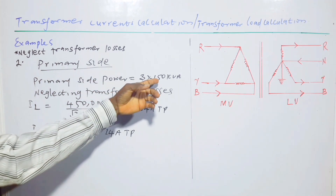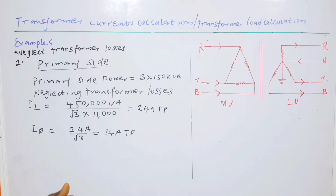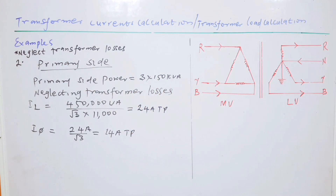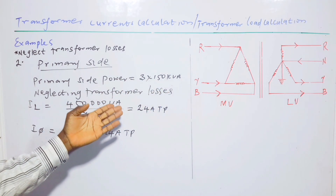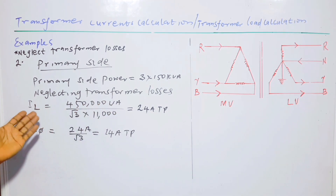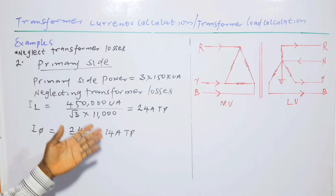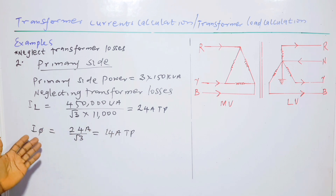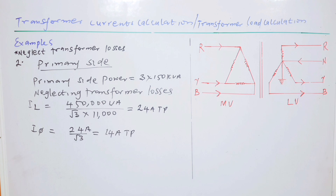For the final part, one must take the highest phase kVA — which gives a total of 450 kVA — to obtain the power on the primary side of the transformer. Applying 450,000 VA with 11 kV gives a primary line current of 24 A three-phase, and the phase current is 24 / √3 = 14 amperes, three-phase.